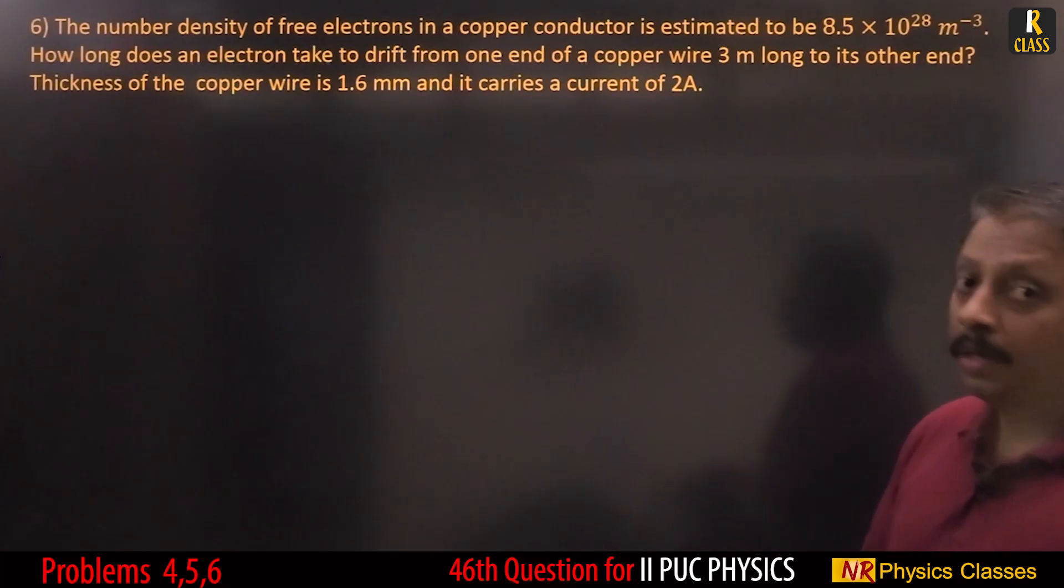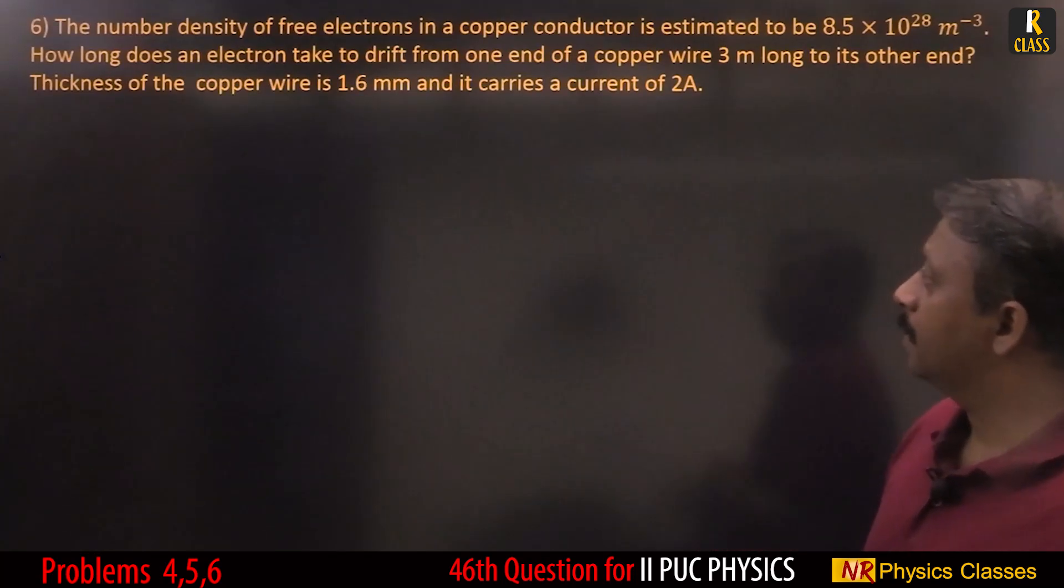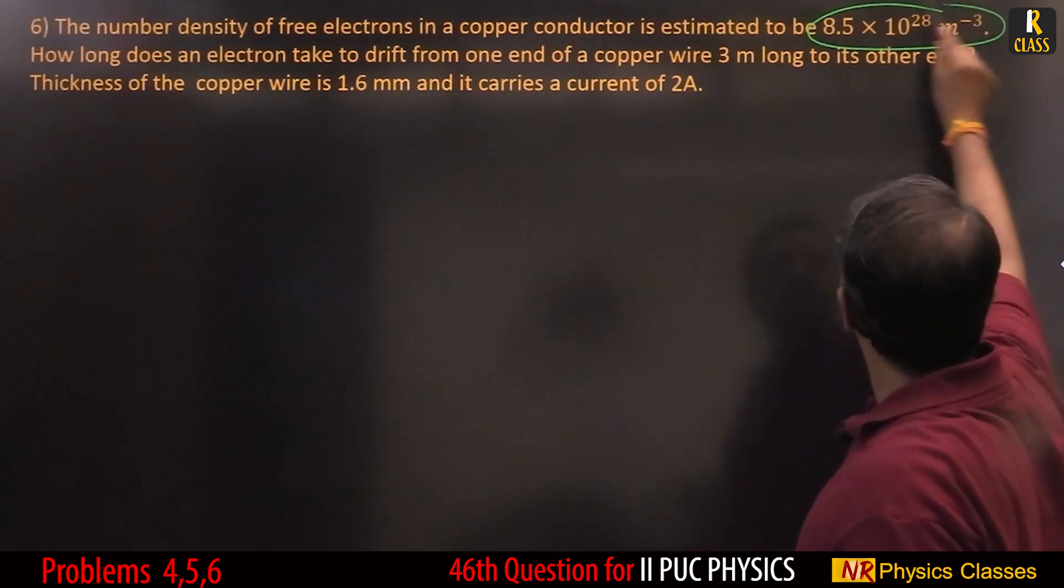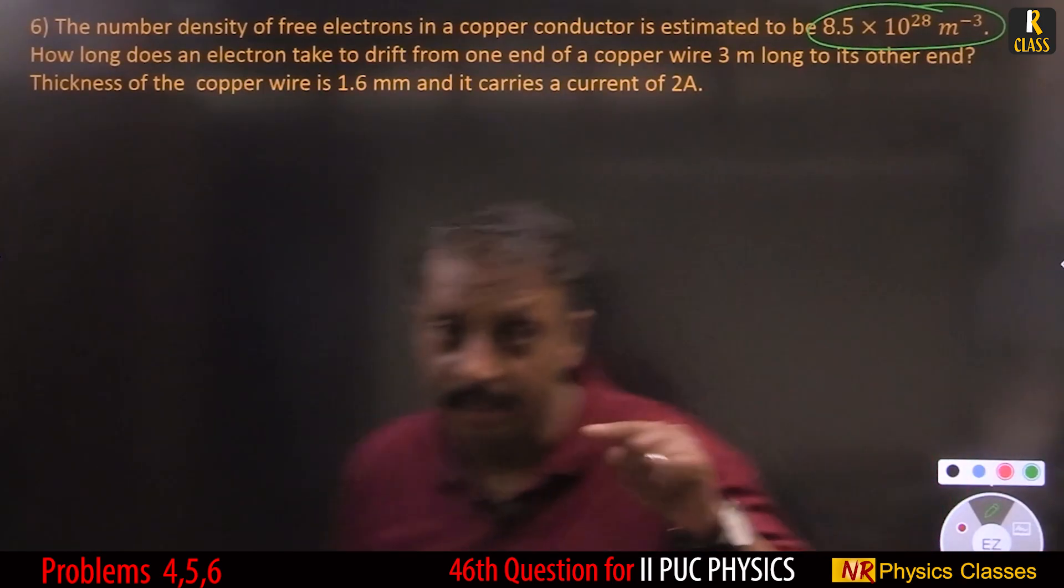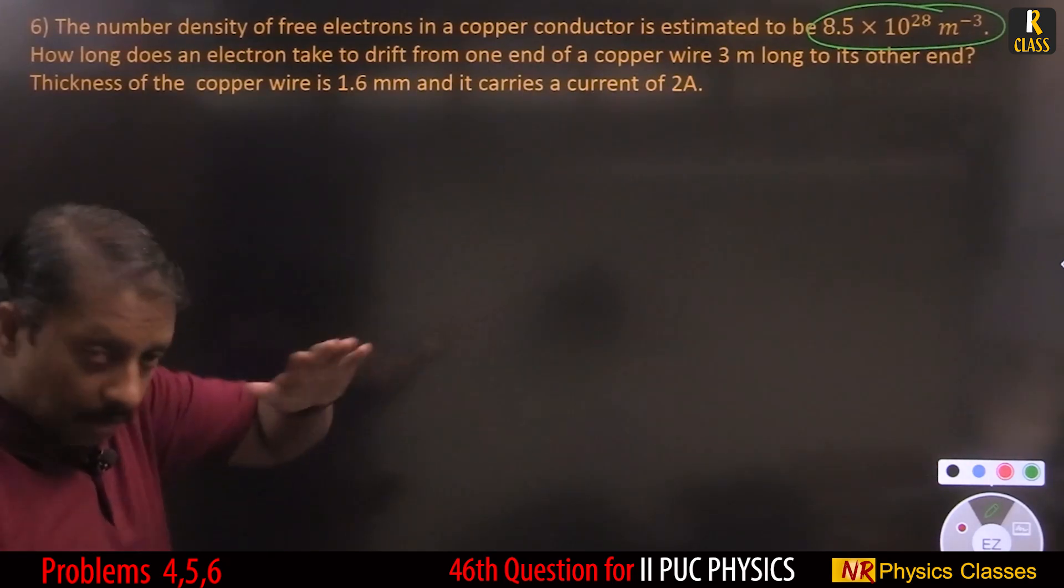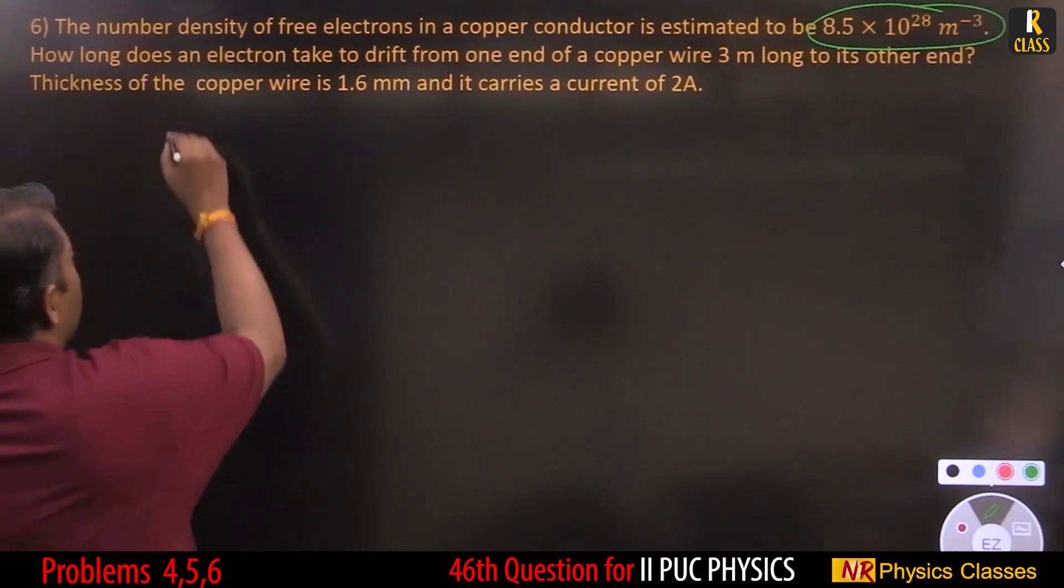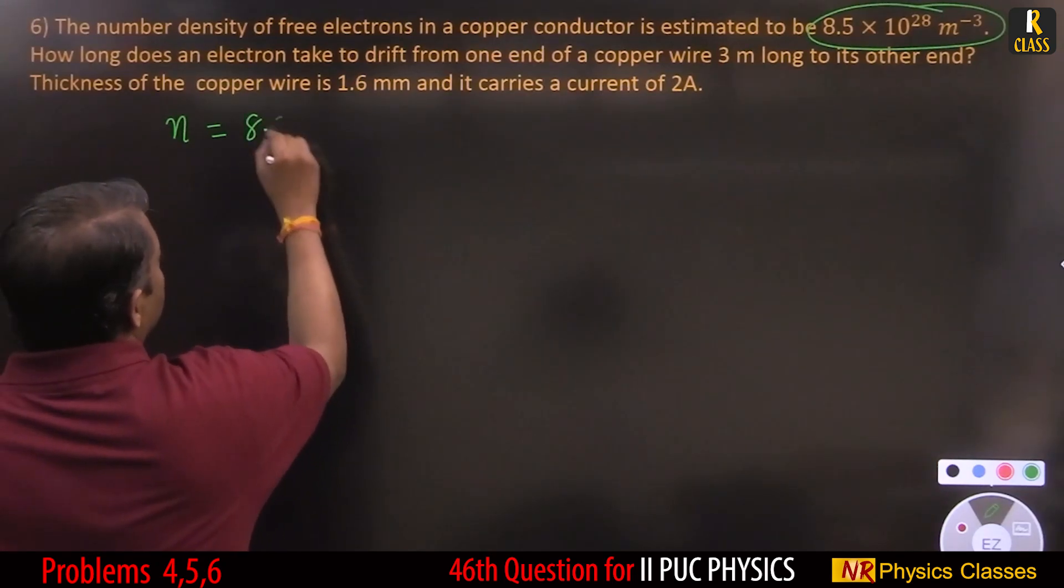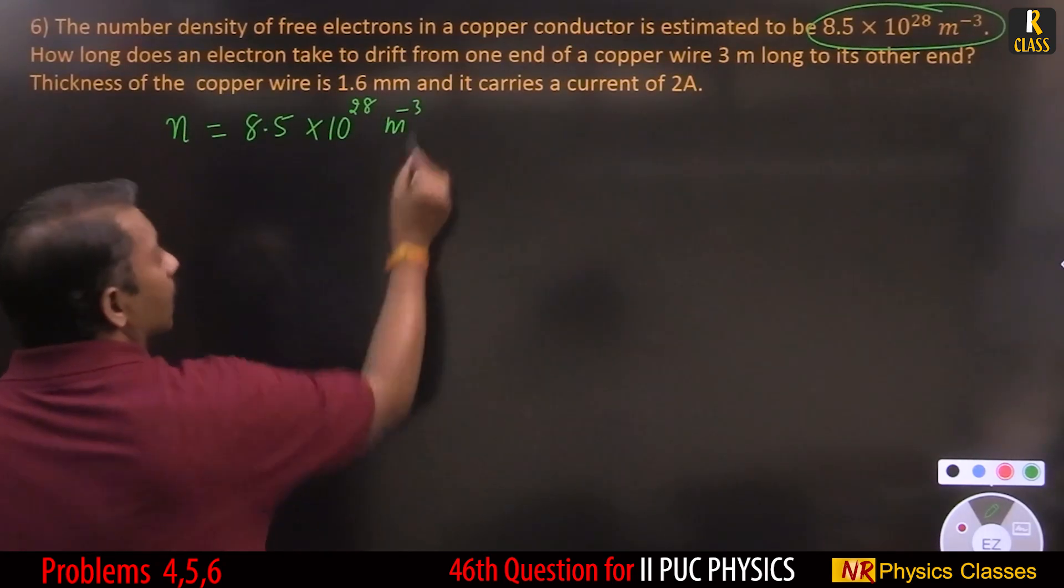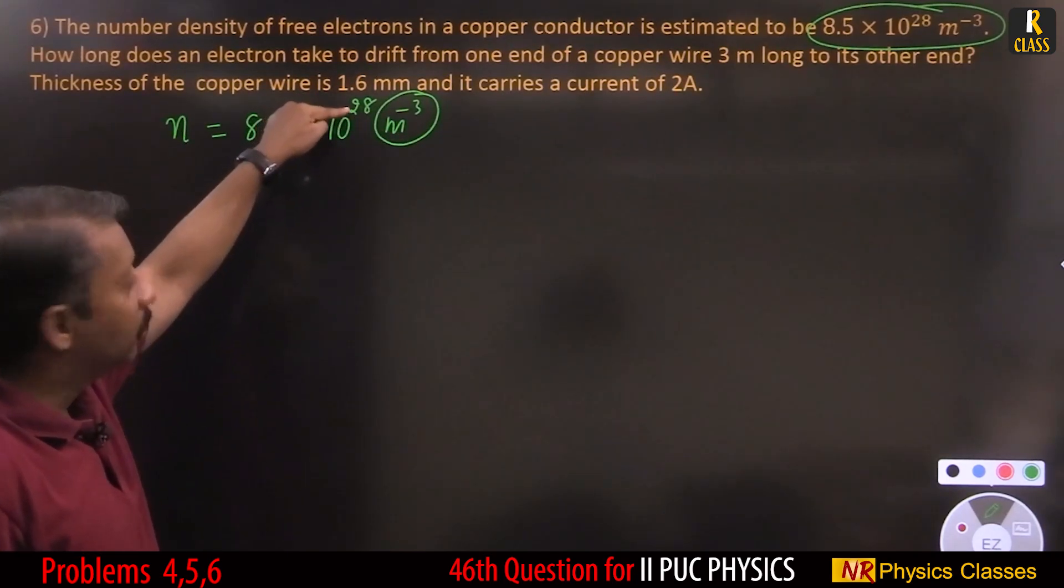One more type based on I equals nAVde drift velocity. The number density of free electrons in copper conductor is estimated to be 8.5 times 10 to the power 28 per meter cube. Number density, small letter n, is number of conduction electrons per unit volume. In your syllabus, if you find numbers like that, there are only two types.